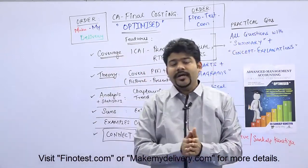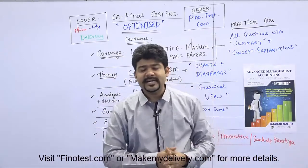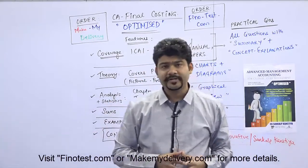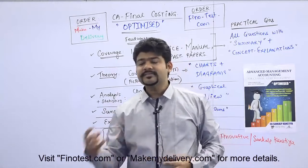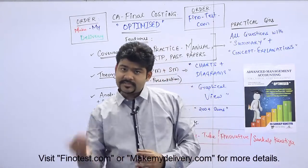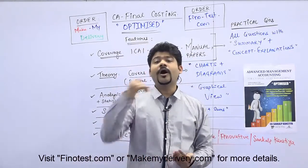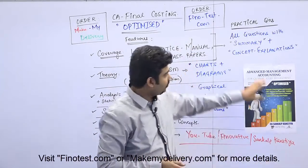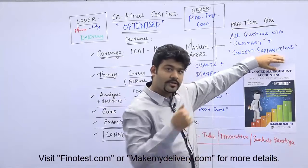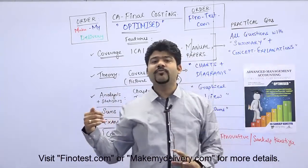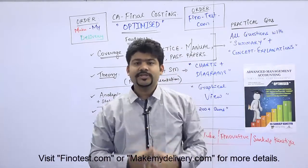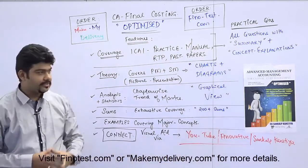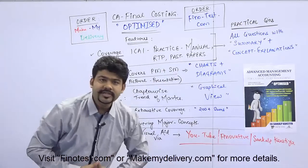Next, the book also has concept-based explanations. At times students look at an answer and are not able to interpret exactly how the answer was arrived at. This book contains the 'how' of the answer — we explain how the concept works in the question and how we derive the solution to the problem. That becomes a very unique point of CA Final Costing Optimized.